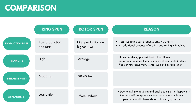Regarding linear density, ring spun yarn ranges from 5 to 600 tex, while rotor spun yarn ranges from 20 to 60 tex — meaning ring spinning offers a wider variety. In terms of appearance, ring spun yarn is less uniform while open end rotor spun yarns are more uniform, due to fewer irregular fibres. This is because of the multiple doubling and back-doubling that happens in the groove of the rotor, forming tiny layers of fibres. Rotor spun yarns tend to be more uniform in both appearance and linear density compared to ring spun yarn.